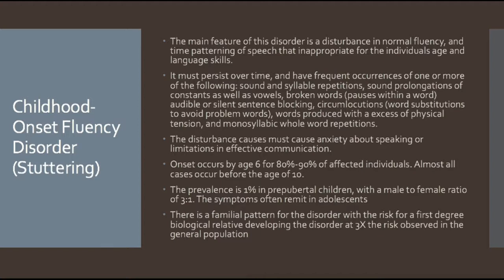Symptoms often remit in adolescence, so the prognosis may simply be a wait-and-see picture where most children end up not having trouble once they reach adolescence. There is a family pattern associated with the disorder — first-degree biological relatives have a three times higher risk of developing the disorder than the general population. So if mom and dad have childhood onset fluency disorder, it is at least three times more likely their child may have it.